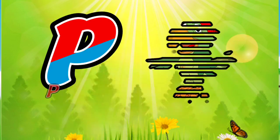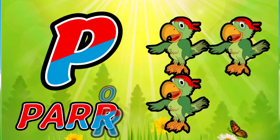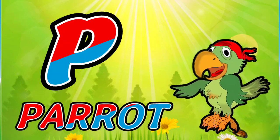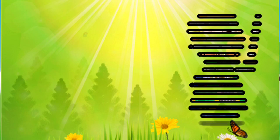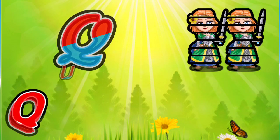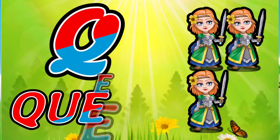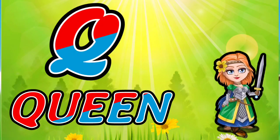P for Parrot. P, A, R, R, O, T. Parrot. Q for Queen. Q, U, E, E, N. Queen.